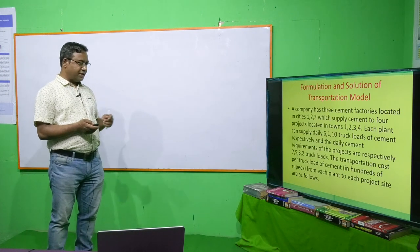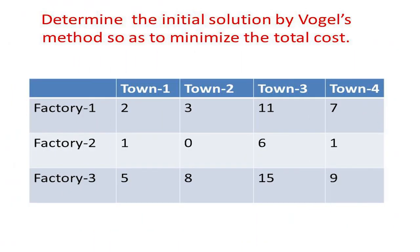From factory one to town one the transportation cost is 200 rupees per lot, to town two it is 300 rupees, to town three it is 1100 rupees, and to town four it is 700 rupees per lot.